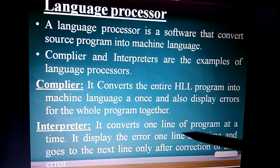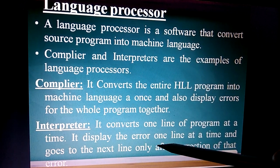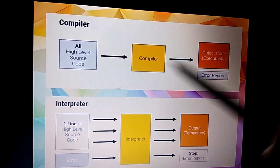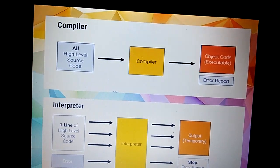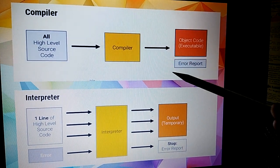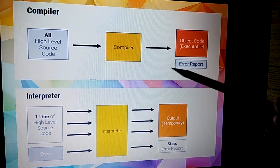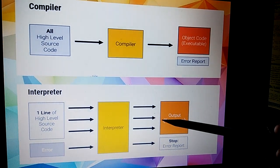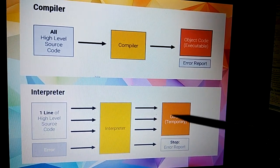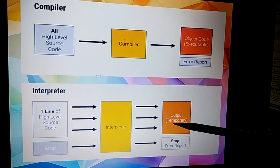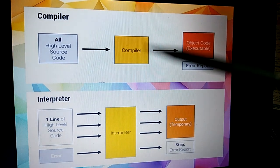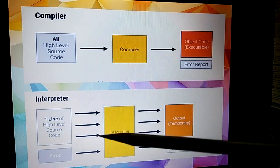The interpreter converts one line of a program at a time. It displays the error one line at a time and moves to the next line only after correction of that error. Looking at the diagram: the compiler converts the entire high-level program into machine language at once and displays all errors together, while the interpreter converts one line at a time and shows errors line by line. Both are programs for converting high-level language to machine language.